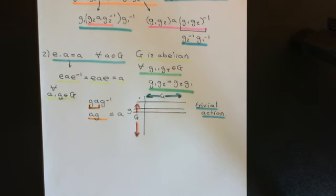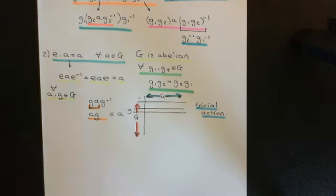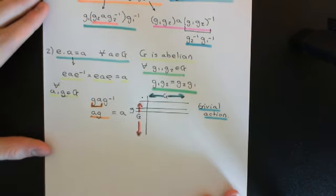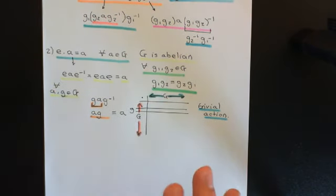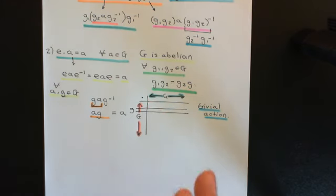That's the basic introduction to how we can view conjugation as a group action of the group capital G on itself. In the next video, we will move on to the concept of conjugacy classes, which relates to the concept of the orbits of this group action of capital G on itself by conjugation.